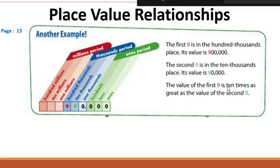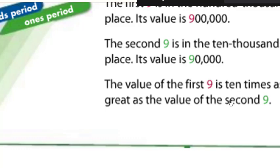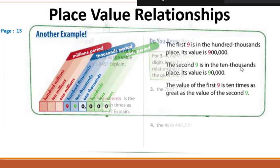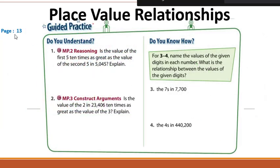The value of the first nine is ten times as great as the value of the second nine. You can see five zeros here and four zeros there — only one more zero, and one more zero means ten times. In the same page we have guided practice questions three and four, which we will solve now.